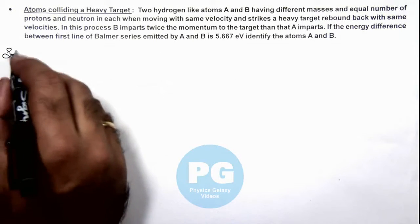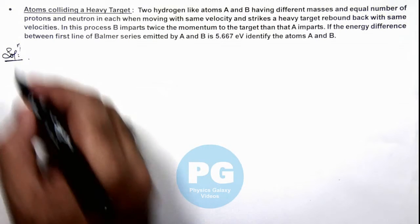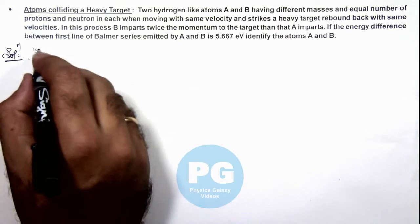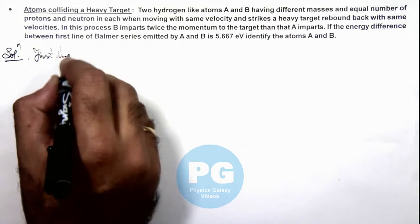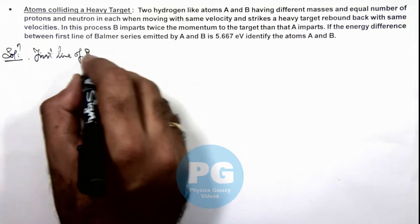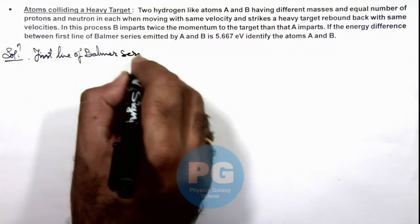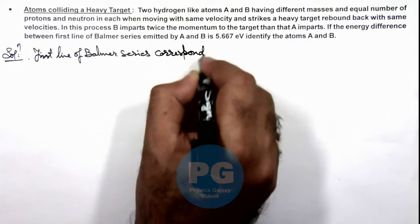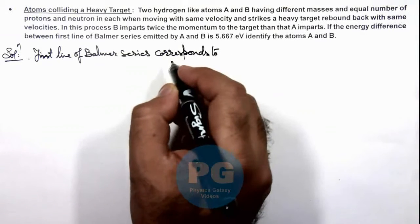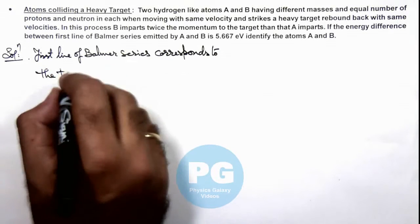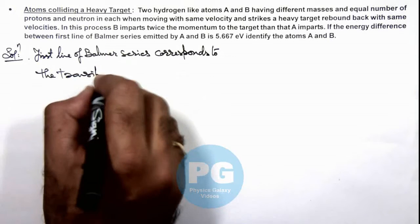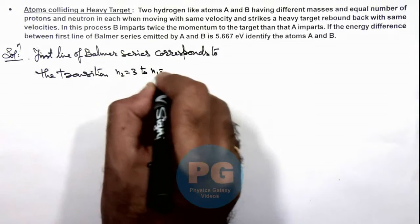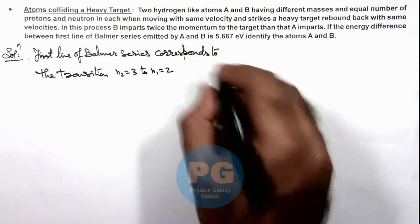Here in this situation, first we can calculate the energies of first line of Balmer series. The first line of Balmer series corresponds to the transition n₂ = 3 to n₁ = 2. So in this situation we can write here.